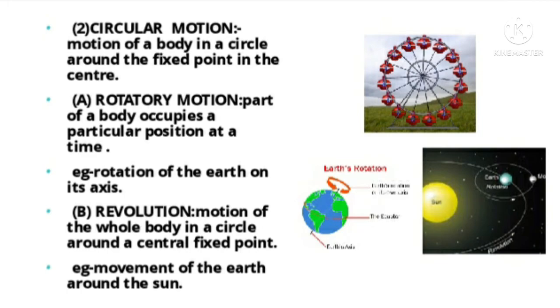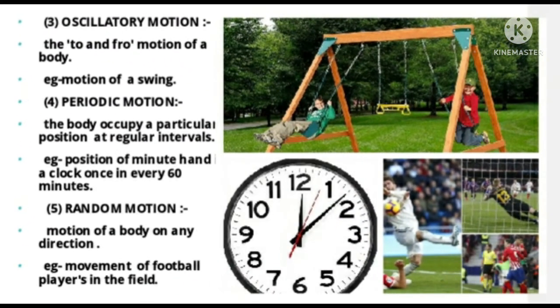Oscillatory motion: the to and fro motion of a body is called oscillatory motion. Example: the motion of a pendulum, or the motion of a swing. Swing moves to and fro, so that is the example.